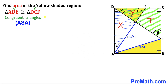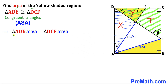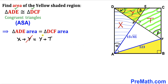We conclude that triangles ADE and DCF are congruent by the Angle-Side-Angle congruence theorem, since side AD is congruent to side CD (both sides of the square). Because these triangles are congruent, their areas are equal. The area of triangle ADE is X plus Y, and the area of triangle DCF is Y plus T. Setting these equal, Y cancels, giving us X equals T.